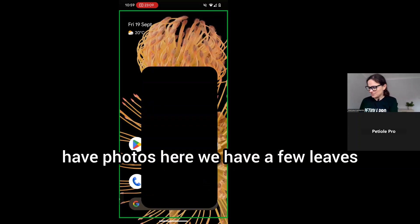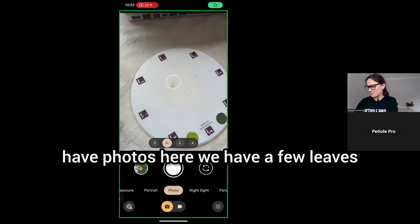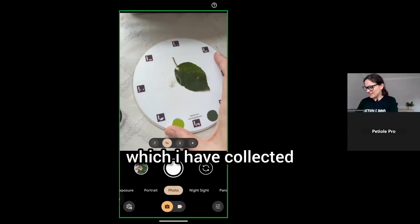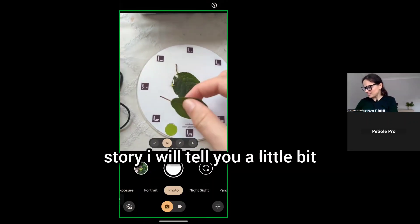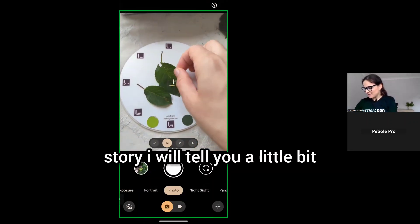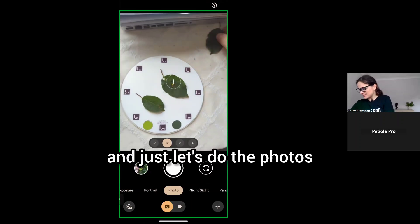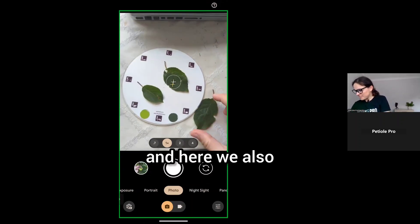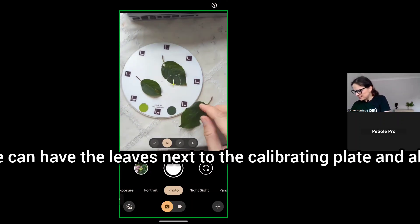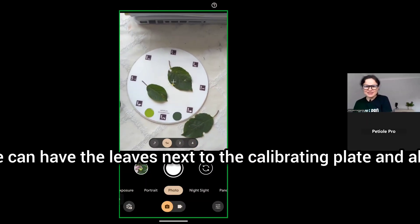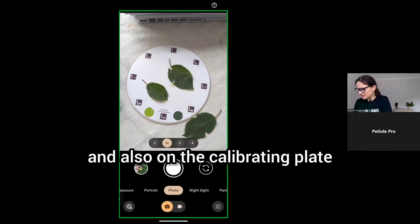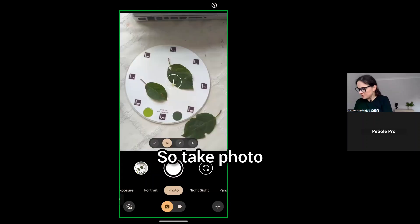First of all we need to have photos. Let's have photos. Here we have a few leaves which I have collected and yes, a calibrating plate. It's a separate story I will tell you a little bit. Just let's do the photos. Here we can have the leaves next to the calibrating plate and also on the calibrating plate. Take photo and go back to PTL Pro.